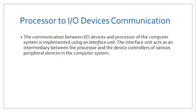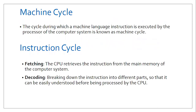We also have the processor to I/O device communication. This communication happens between the various input and output devices and the processor. That particular interface where the processor interacts with input devices is referred to as the interface unit. Between the processor and the I/O devices, we have the control unit, which manages this particular communication and forms an intermediary between the processor and these devices.